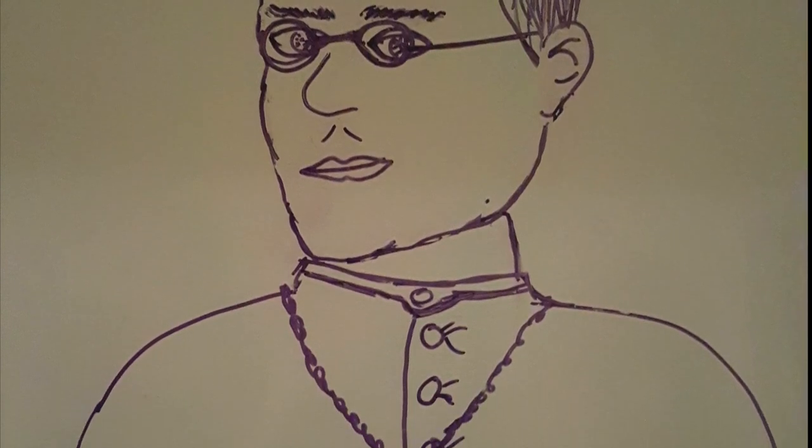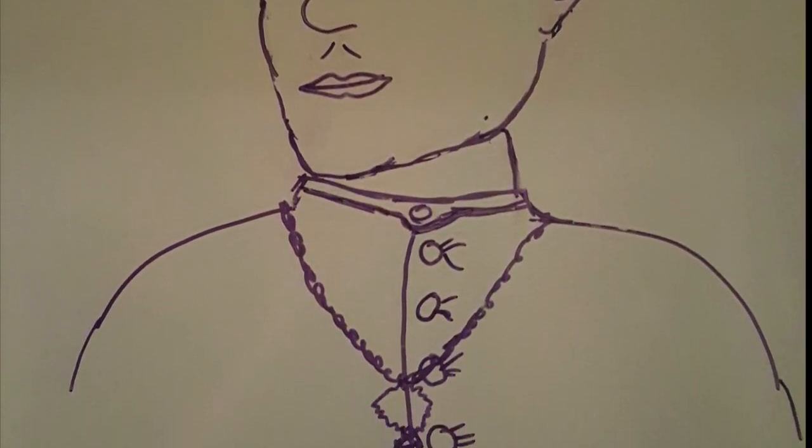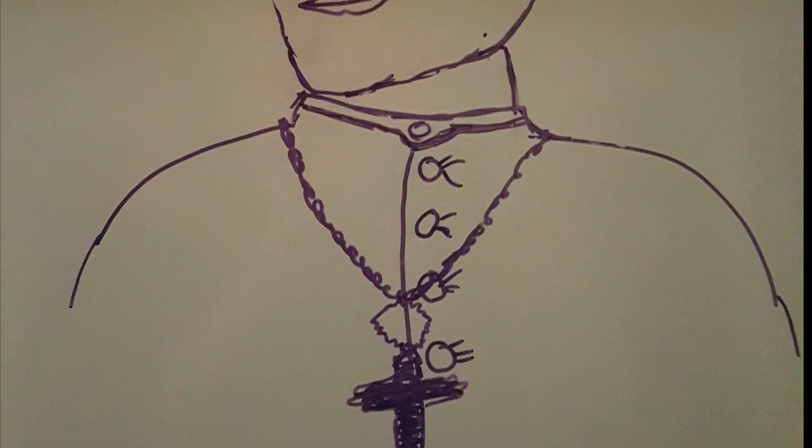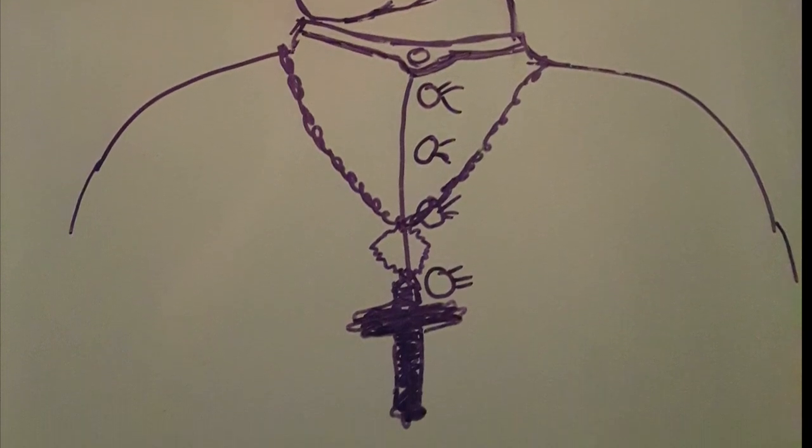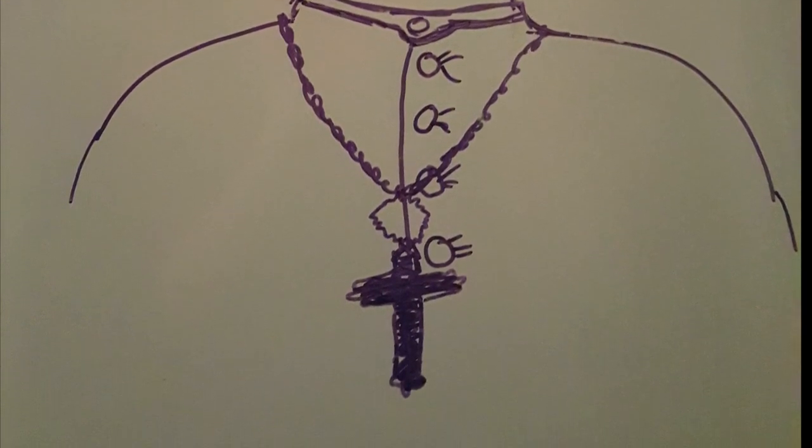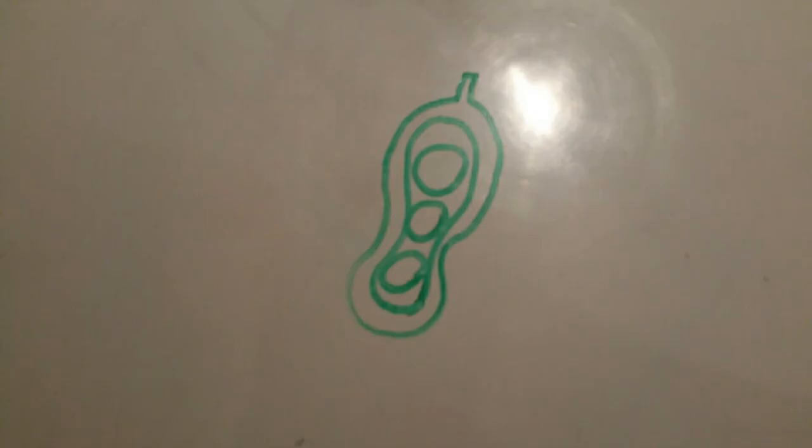Gregory Mendel was a monk born in 1822, and he is referred to as the father of genetics. Between 1856 and 1863, Mendel established many of the rules of heredity using pea plants, now referred to as the laws of Mendelian inheritance.